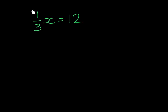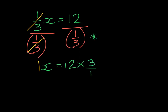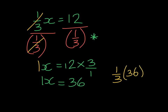In this next example we see X is being multiplied by one third. So I'm going to do the inverse of multiplying by one third, which is to divide by one third on both sides. On the left hand side, one third divided by one third leaves me with 1 times X. On the right hand side, 12 is being divided by a fraction — when we divide by a fraction we invert and multiply, so it becomes 3 over 1. 12 times 3 gives me 36. We can check by taking one third times 36: 1 times 36 gives 36 in the numerator divided by 3, which gives me 12.